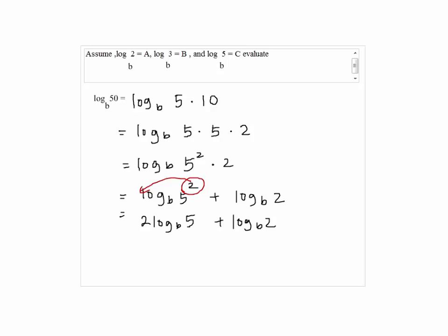But we were given that log base B of 5 equals C, and log base B of 2 equals A. So the answer will be 2 times C plus A.